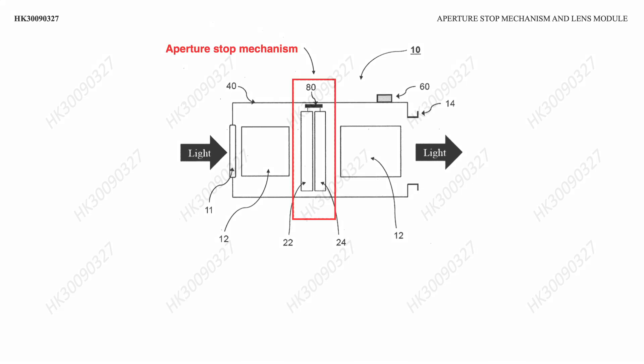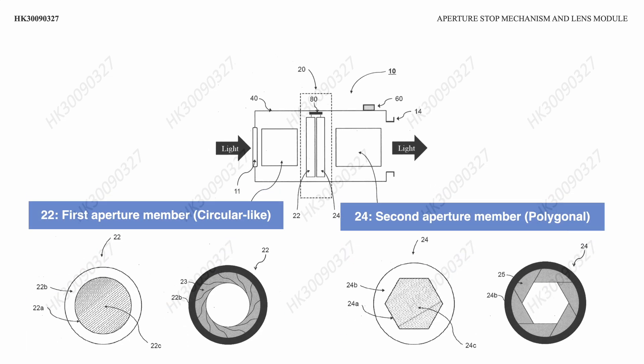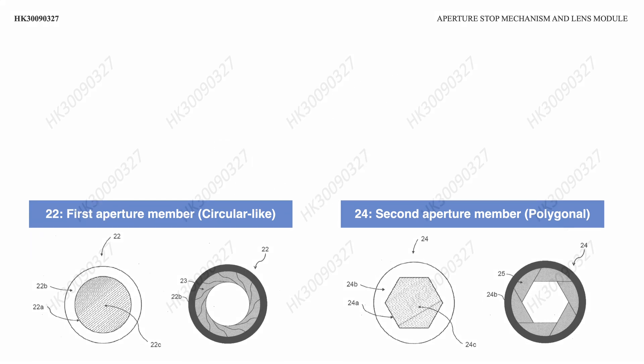The most important part of the invention is the aperture mechanism that consists of two overlapping aperture members. One of the aperture members uses curved aperture blades, forming a circular-like light-passage opening. The other aperture member uses straight aperture blades, forming a regular polygonal light-passage opening. The two aperture members overlap each other.